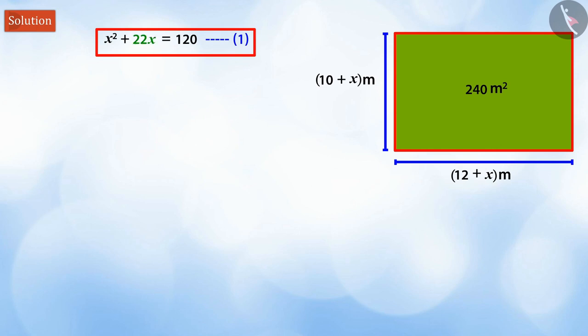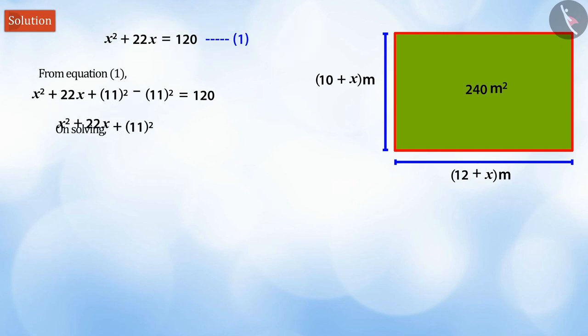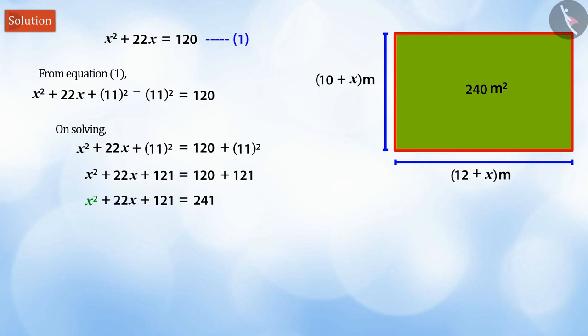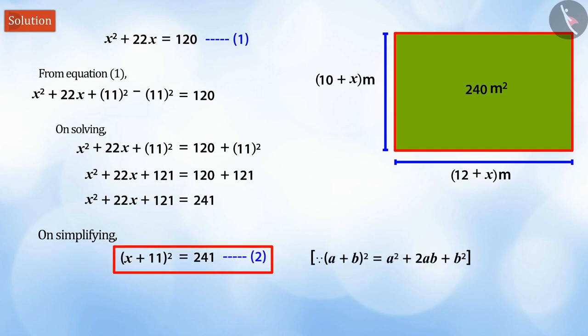Now, if we divide the coefficient of x in equation 1 by 2, we get 11. Let us add and subtract the square of 11 to the left side of equation 1 to keep the equation balanced. When we solve this equation, we get x squared plus 22x plus 121 equal to 241, which can be represented in the given manner in equation 2.